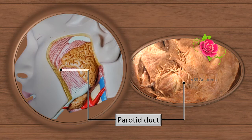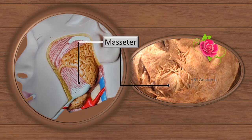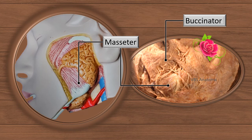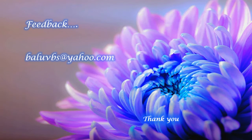Discussion of the parotid is incomplete without mention of the parotid duct. The duct has been shown in both the model and the dissected specimen. It emerges from the anterior border, goes forwards across the masseter muscle, dips down, pierces the buccinator muscle and the buccopharyngeal fascia, and finally opens into the vestibule of the mouth roughly at the level of the upper second molar tooth.